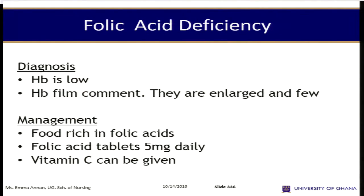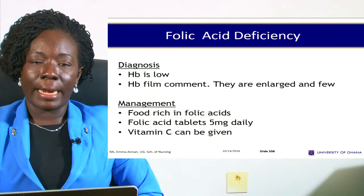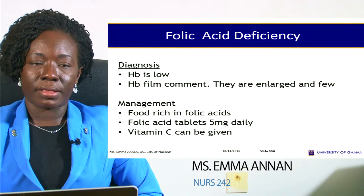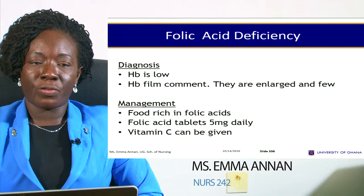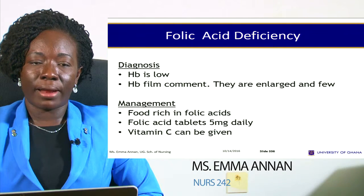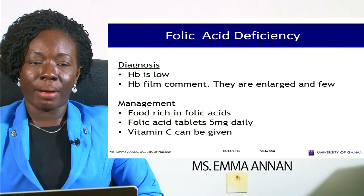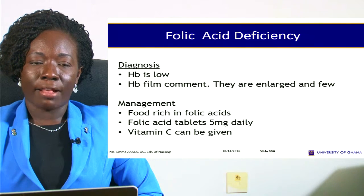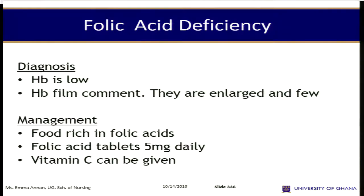Diagnosis: the hemoglobin is usually low and a blood count shows large and few red blood cells. Management: give the child food rich in folic acid, folic acid tablets 5 mg daily, as well as vitamin C.